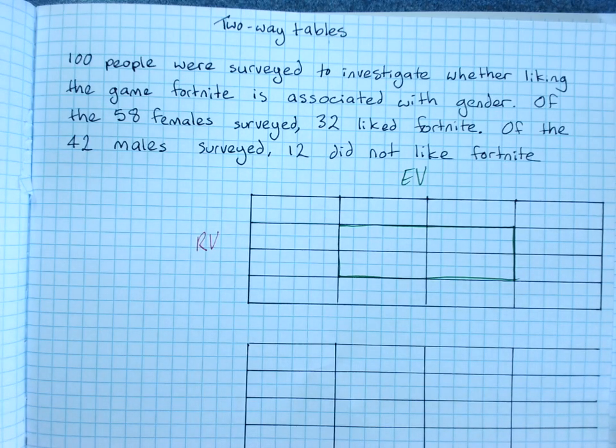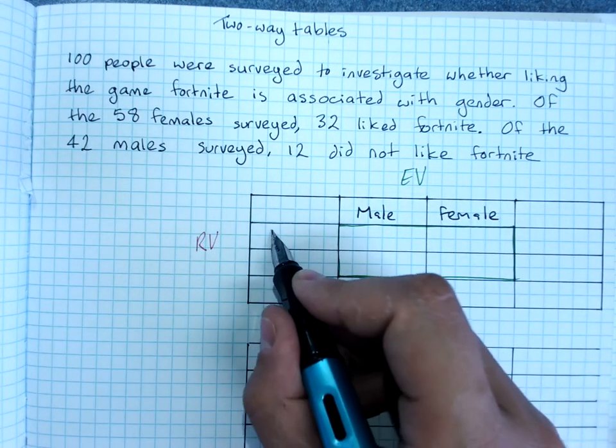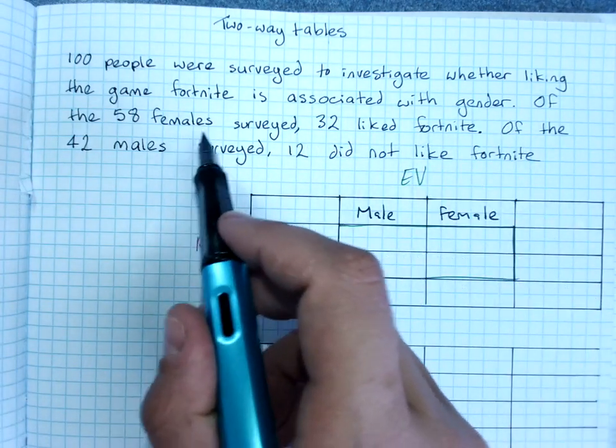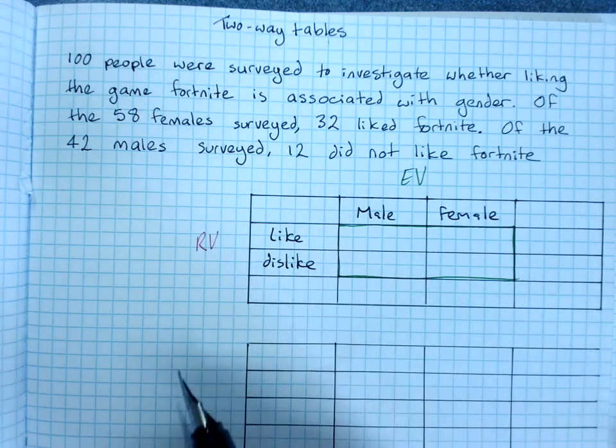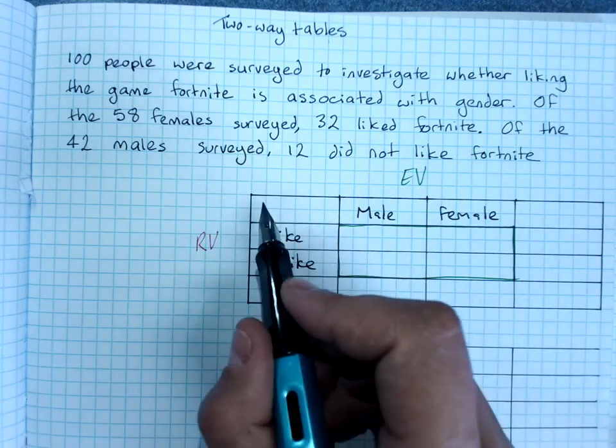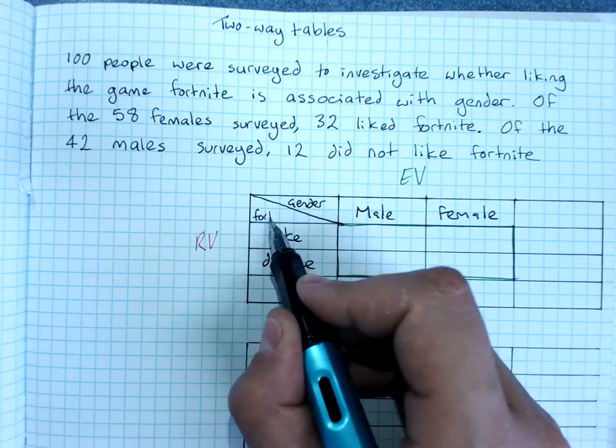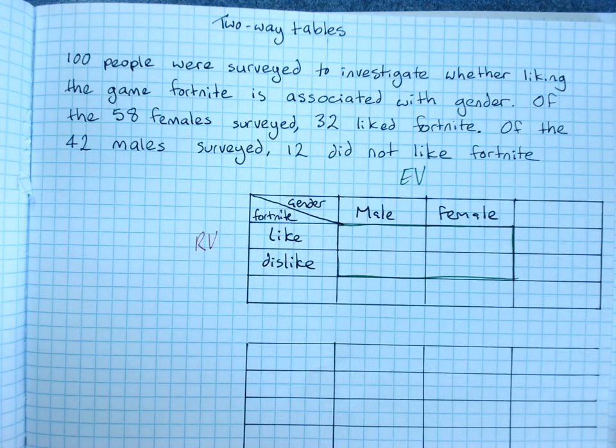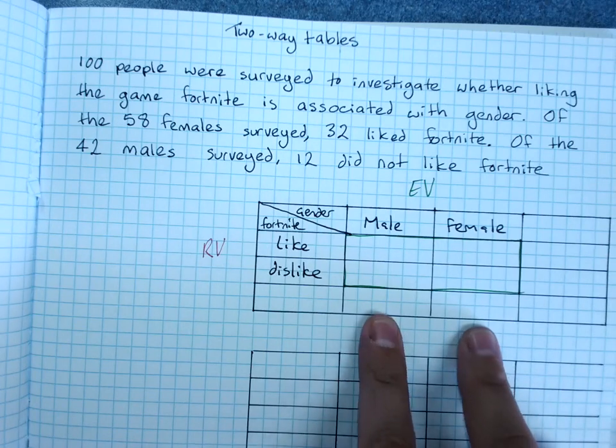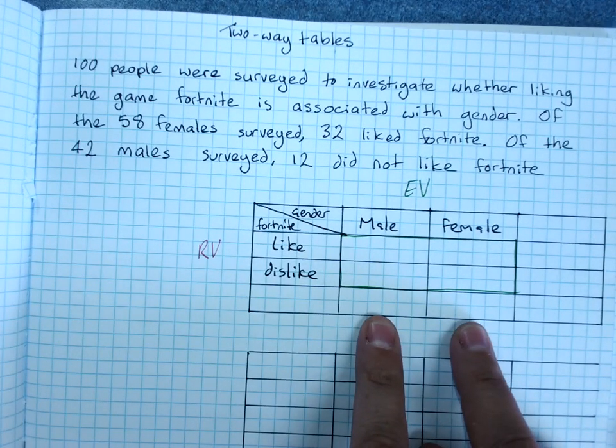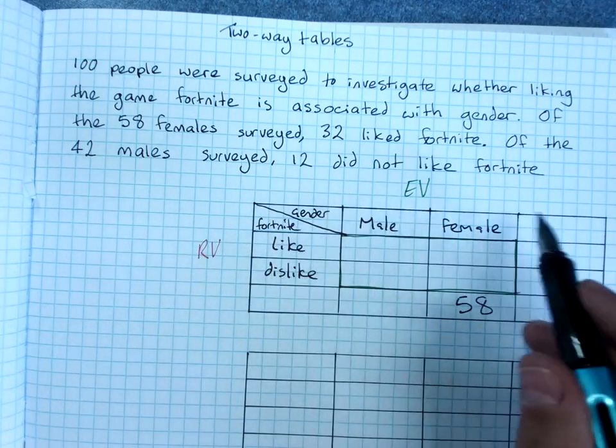So we have too many pens here. Gender, male and female and like. So you can find out the variables in here. Liked Fortnite and did not like Fortnite. If you want to label them, you can label here or you can pop a line across here if you want and say gender Fortnite. Something like that. Now you put in the information that you have. The box at the bottom of the column is the total for that column. So there were 58 females and there were 42 males.